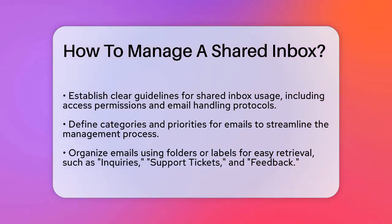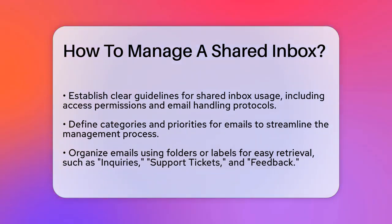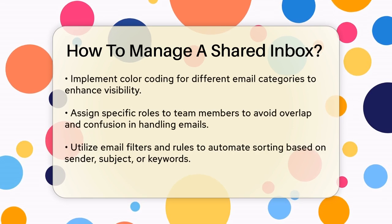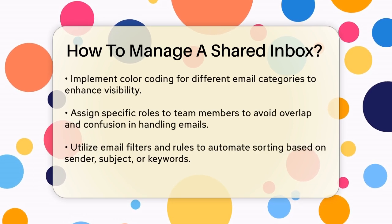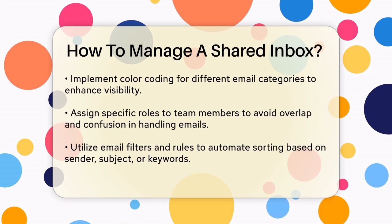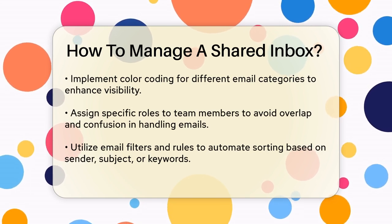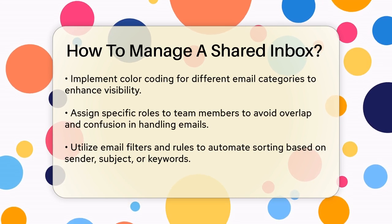Organizing your emails is key. Use folders or labels to categorize emails by type, such as inquiries, support tickets, and feedback. This helps team members quickly find the emails they need and ensures that each email is directed to the right person. You can also use color coding for different labels or folders to make it easier to identify email categories at a glance.